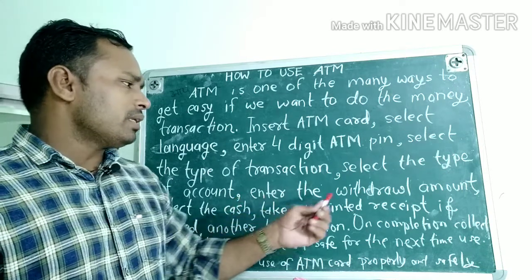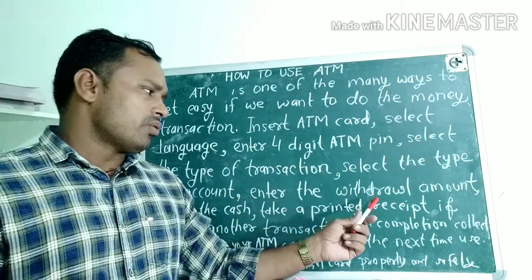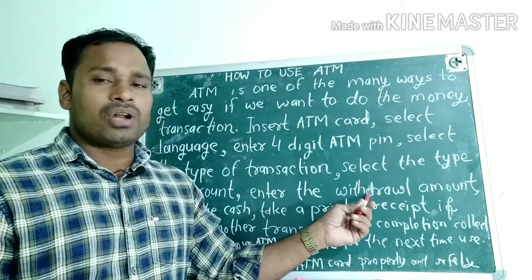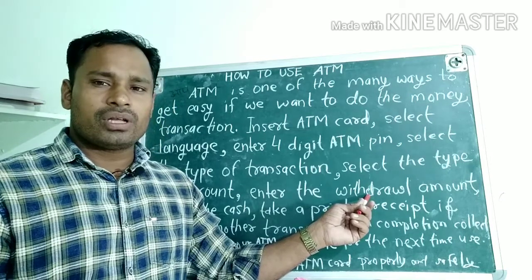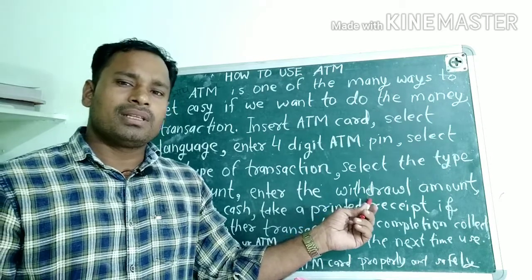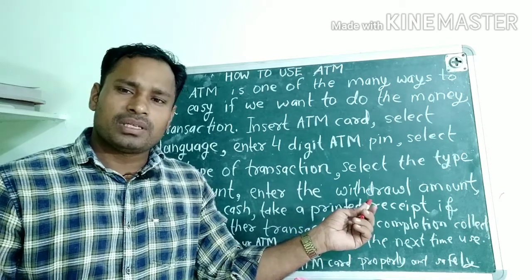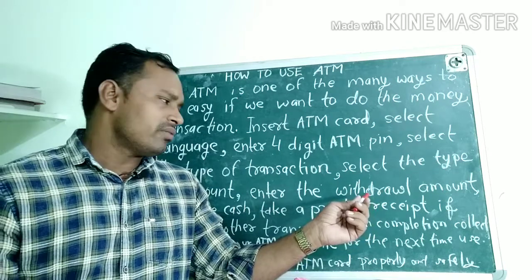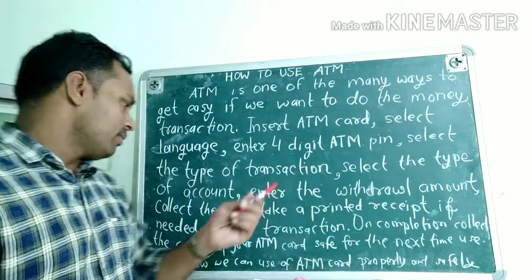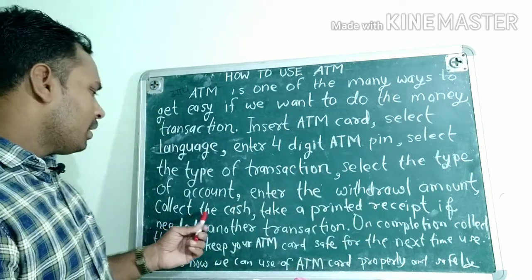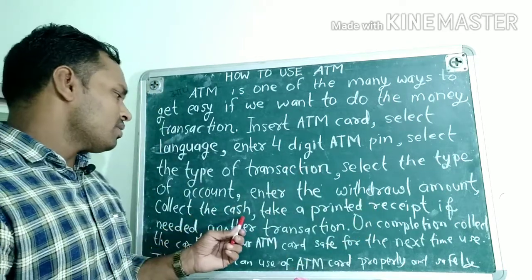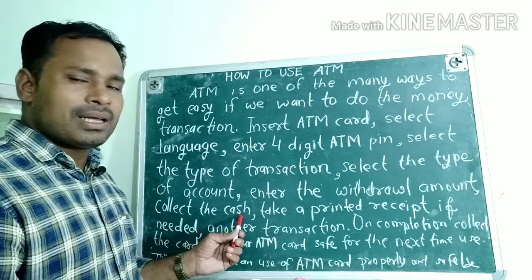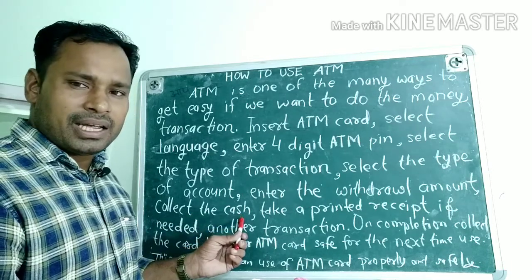Enter the withdrawal amount — that is, fill in the amount you want to withdraw. For example, if you want to withdraw 5,000 rupees, you have to enter 5,000 and feed it into the machine. After that, collect the cash — take out the money and collect it.